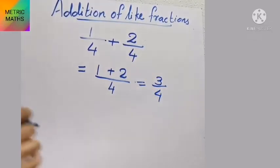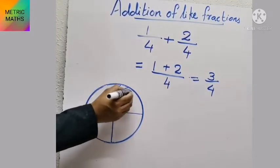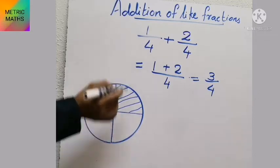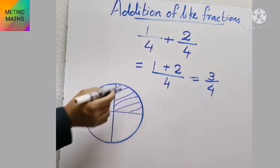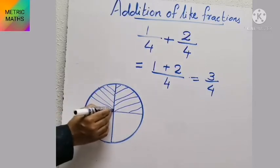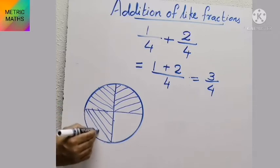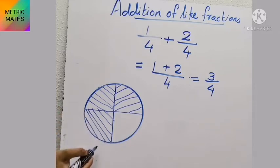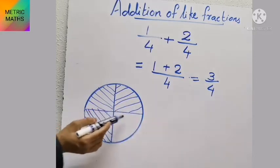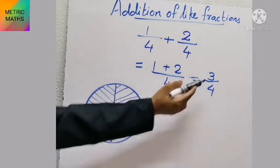So 1 plus 2 equals 3, giving us 3 by 4 as the answer. Look at the figure: first I am shading 1 by 4 — out of 4 total parts, 1 part is shaded. Next, I shade 2 by 4 from the same picture. Now from the figure it is clear that 1 by 4 plus 2 by 4 equals 3 by 4, since 3 parts are shaded out of 4 total parts.